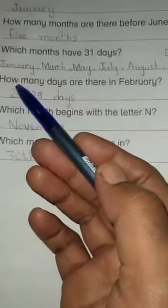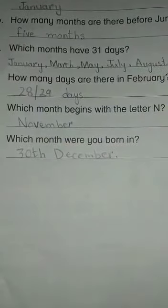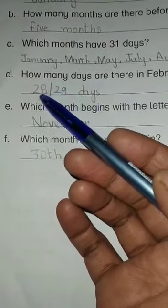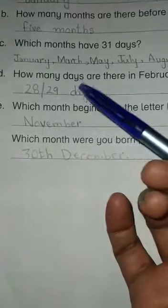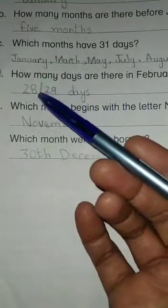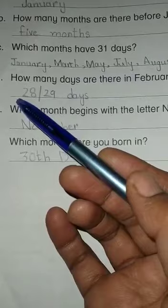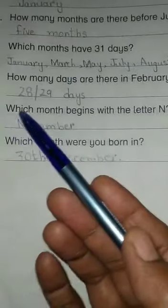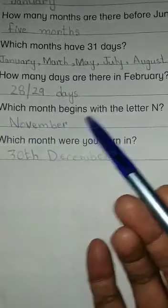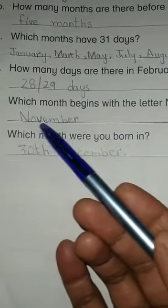Next question: how many days are there in February? February has 28 days, and in a leap year, February has 29 days. Next question: which month begins with the letter N? The answer is November.